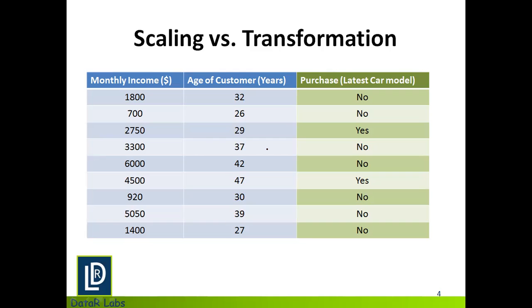Now let's understand this with the example data you see on your screen. I have two independent variables: monthly income and the age of customers. And I have a dependent variable, namely the purchase of a car model by the customer.